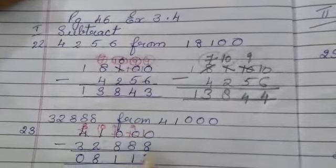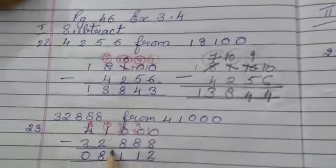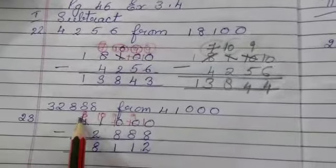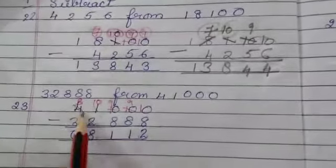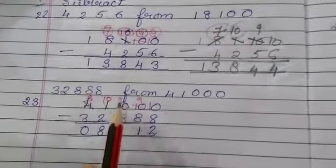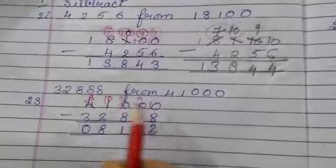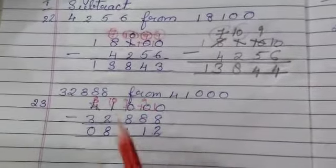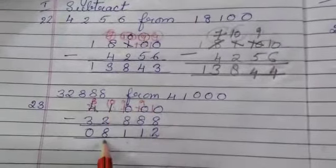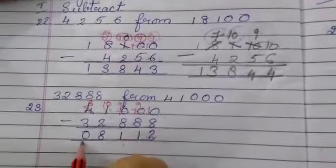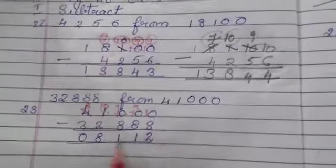We have 41,000 minus 32,888. Again zeros are there. So we have borrowed first from here and made this 10. From this 10 we borrowed and made this 9. From here we borrowed and made this 9, and this becomes 10. 10 minus 8 is 2, 9 minus 8 is 1, 9 minus 8 is 1, 10 minus 8 is 8, and 8 minus 3 is 0. So this is the answer.